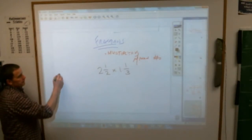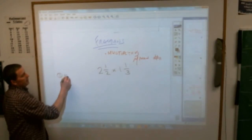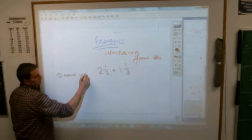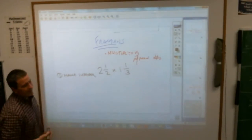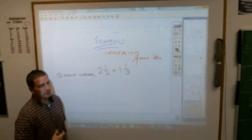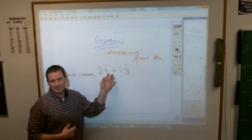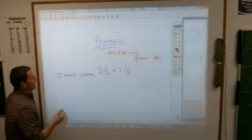The first thing you have to do—anybody? Yes, make them improper. You cannot—people, I see people do this all the time. They multiply the 2 times 1 and get 2, and one half times a third is one sixth. The answer to this is not 2 and 1/6. So get that out of your mind.